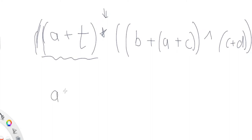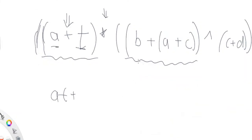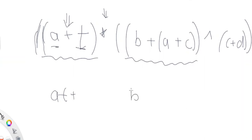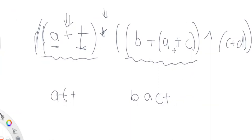To evaluate the left parentheses, we print out the letters `a` and `t`, then print the plus operation. Then we evaluate the second inner parentheses, which contains `b`, `a`, and `c`. So we print out the letters `a`, `b`, `c`, and then put a plus sign for that operation.